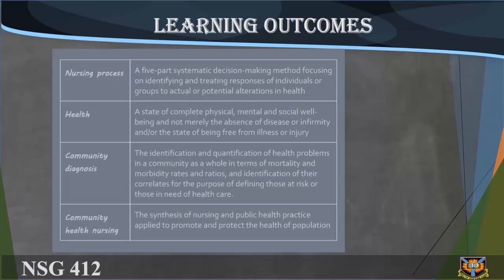Terminology. Nursing process: a five-part systematic decision-making method focusing on identifying and treating responses of individuals or groups to actual or potential alterations in health. Health: a state of complete physical, mental, and social well-being and not merely the absence of disease or infirmity, and the state of being free from illness or injury.